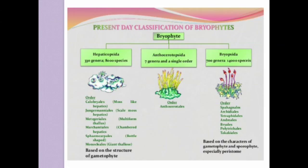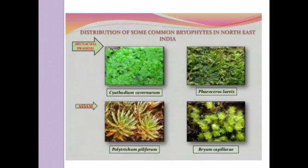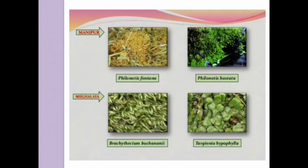Distribution of some common bryophytes in northeast India: in Arunachal Pradesh, Cyathodium cavernarum and Phaeoceros laevis are present. In Assam, Polytrichum piliferum and Bryum capillare are present. In Manipur, Philonotis fontana and Philonotis hastata are present, while in Meghalaya, Biancoinia bachneri and Targionia hypophylla are present. Mizoram and Nagaland also have some species of bryophytes.